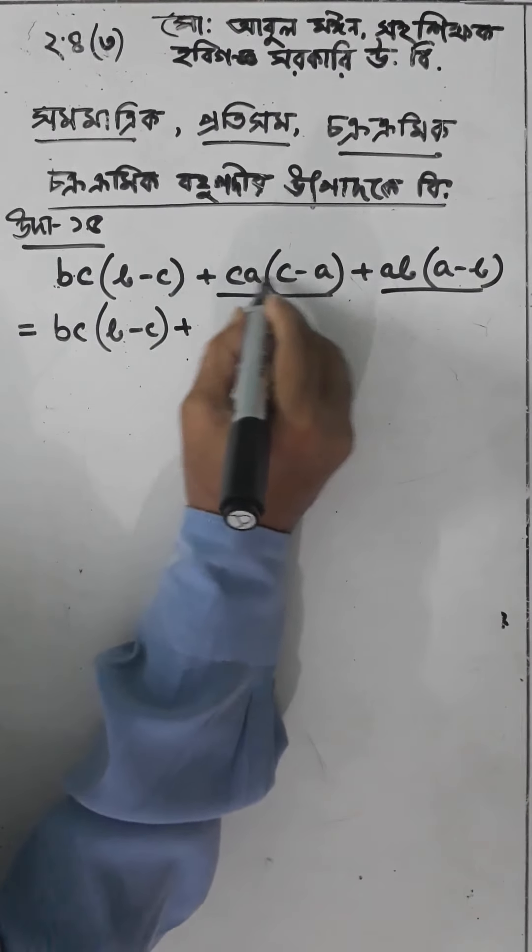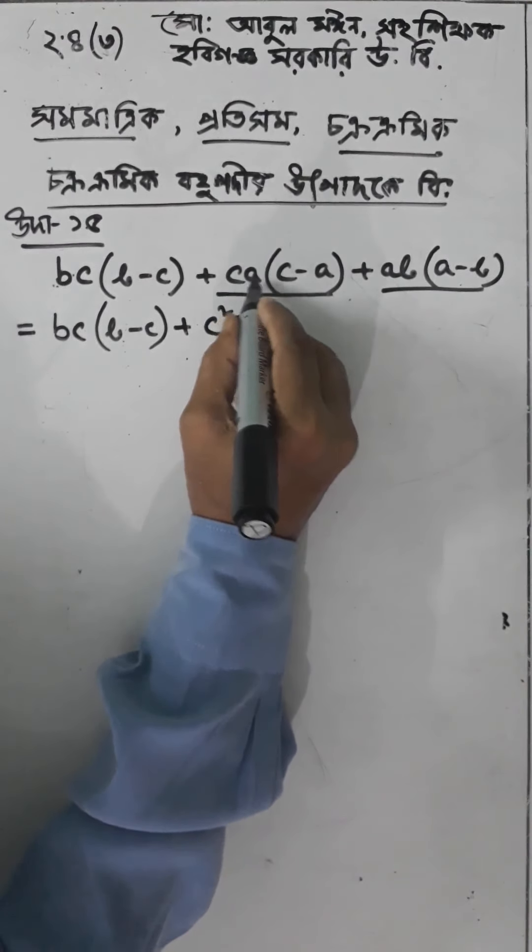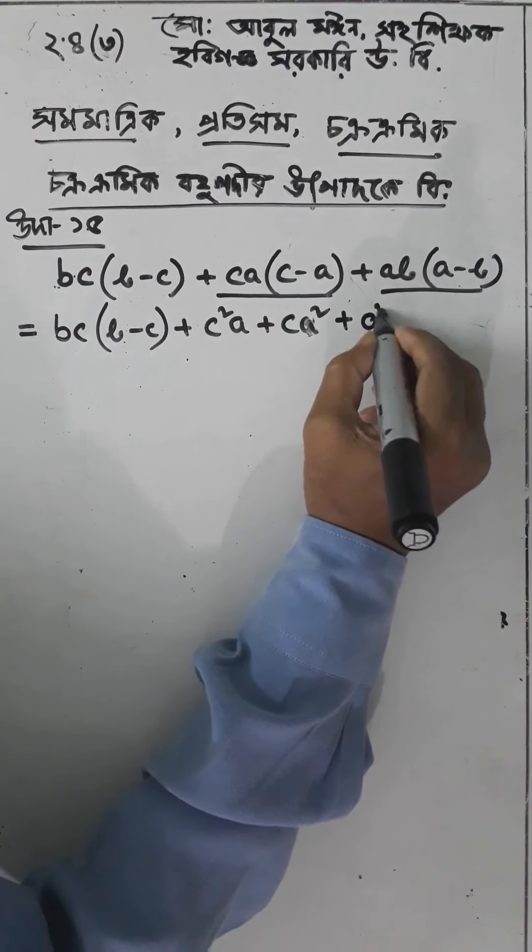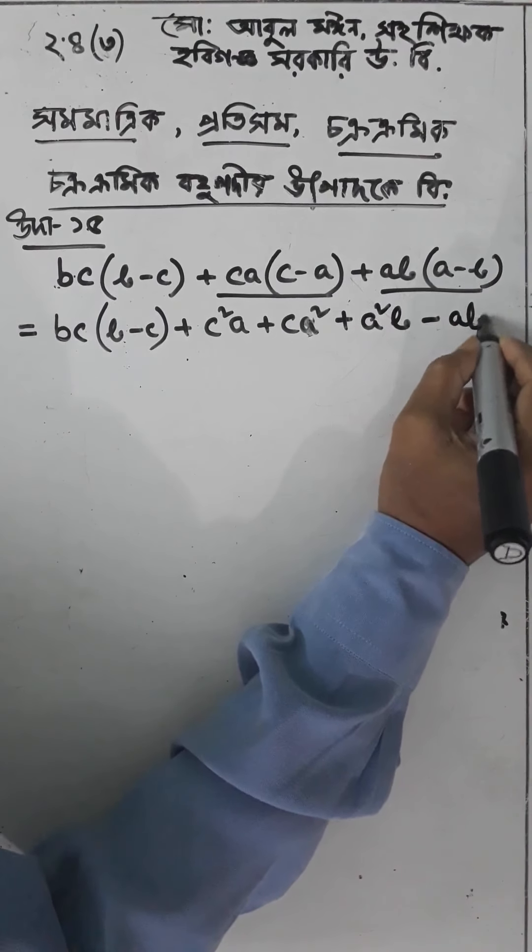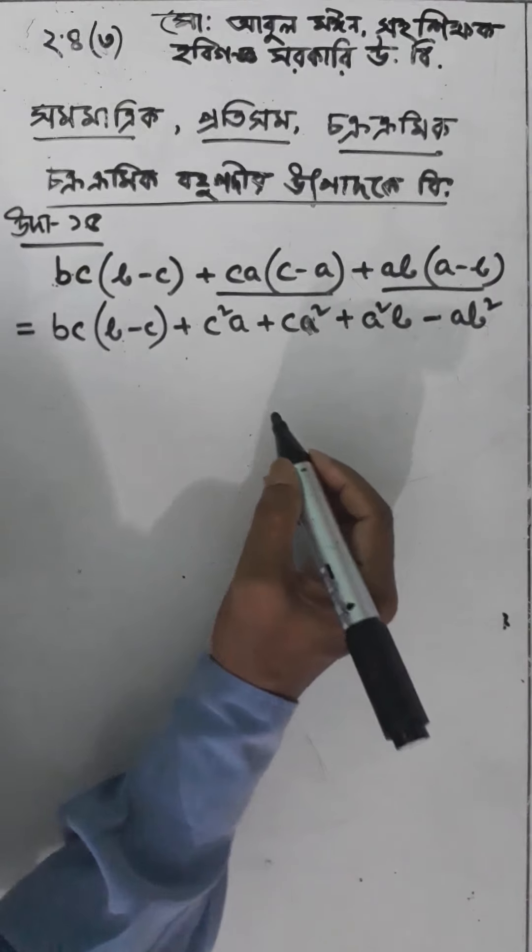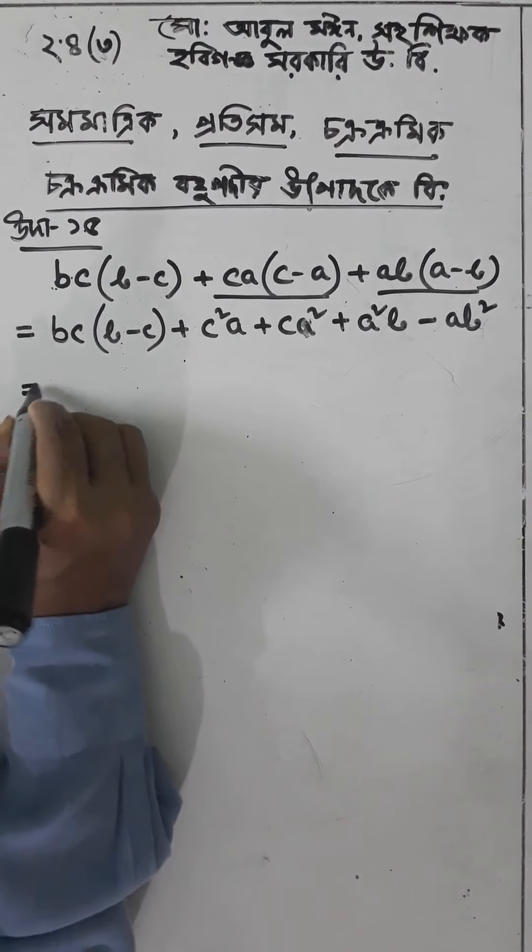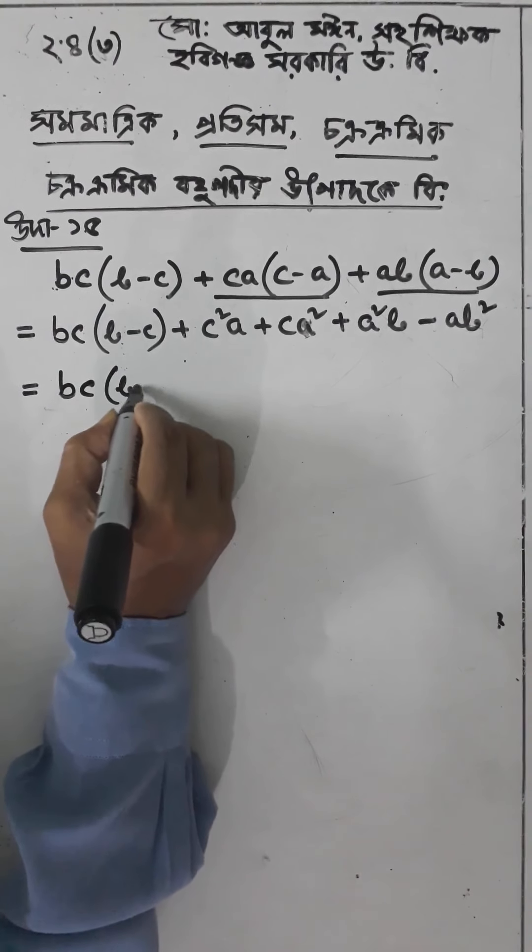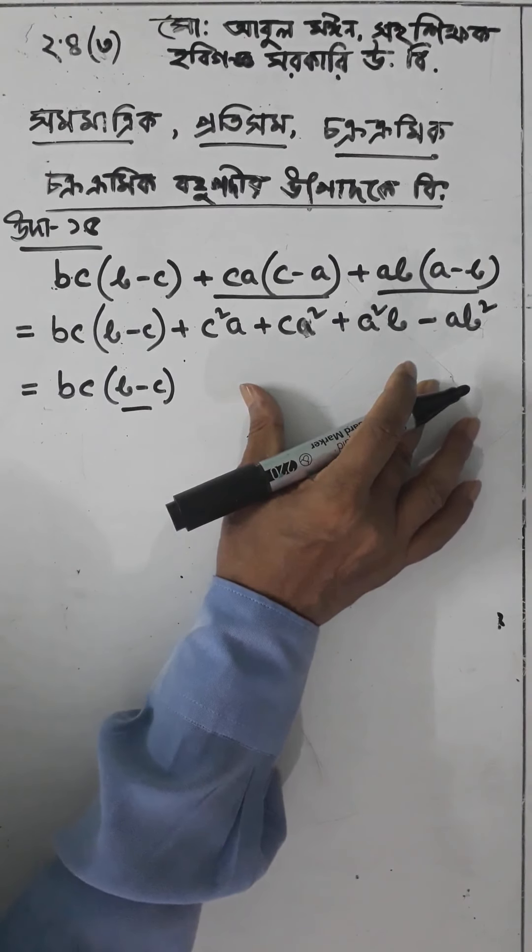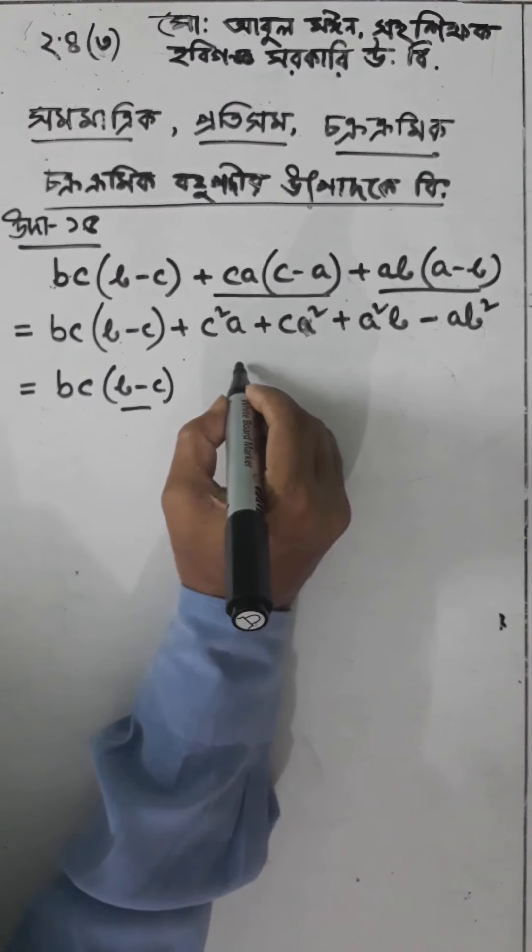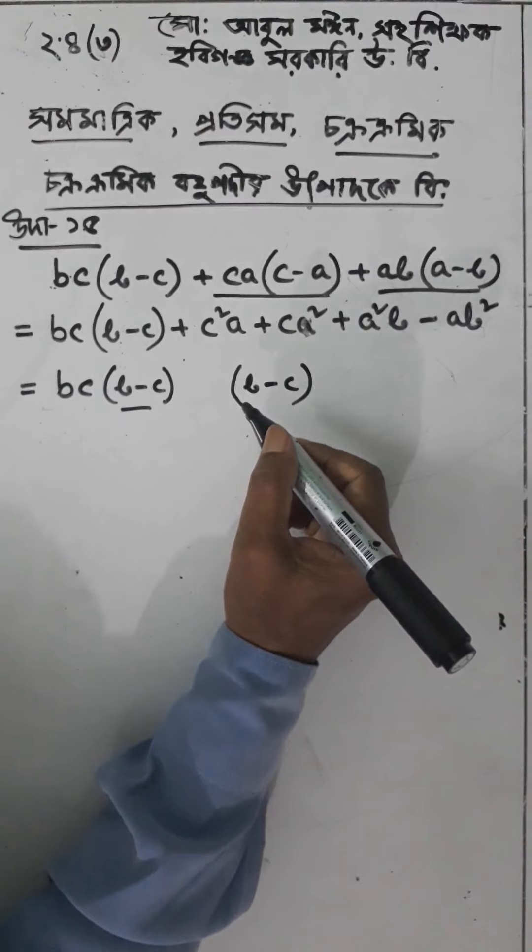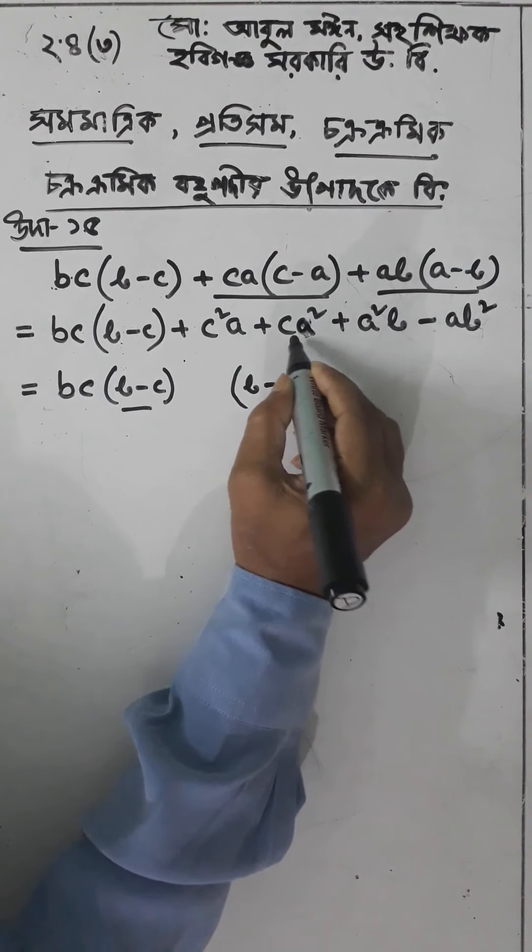We expand this to b square c plus c square a plus c square plus a square b minus ab square. Now bc into b minus c, we can take it as bc into b minus c, or b square minus c square, b cube minus c cube. We can write it as b square c minus bc square.